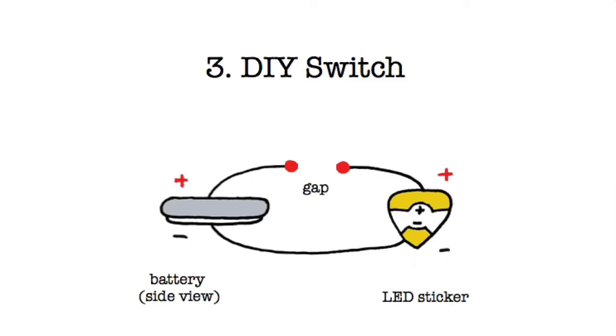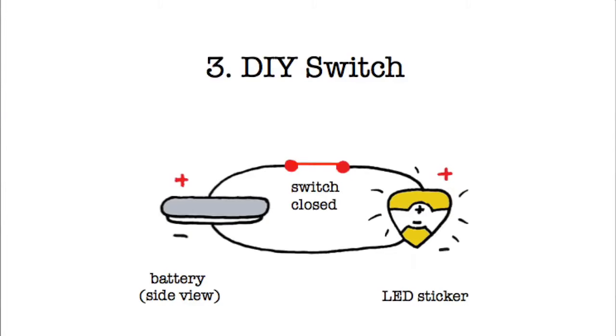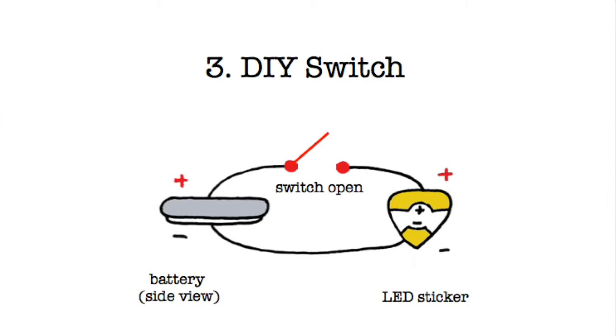A switch is a gap in your circuit that disconnects your LED from your battery. When you close the gap with a conductive material, your light will turn on. When you open the gap, the light will turn off.